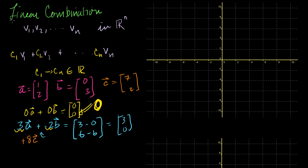Why do we have to add that little linear prefix? Because we're just scaling the vectors up — we're not multiplying the vectors times each other. We haven't even defined what it means to multiply a vector, and squaring a vector would make it non-linear. So all we're doing is adding vectors and scaling them by a scaling factor. That's why it's called a linear combination.